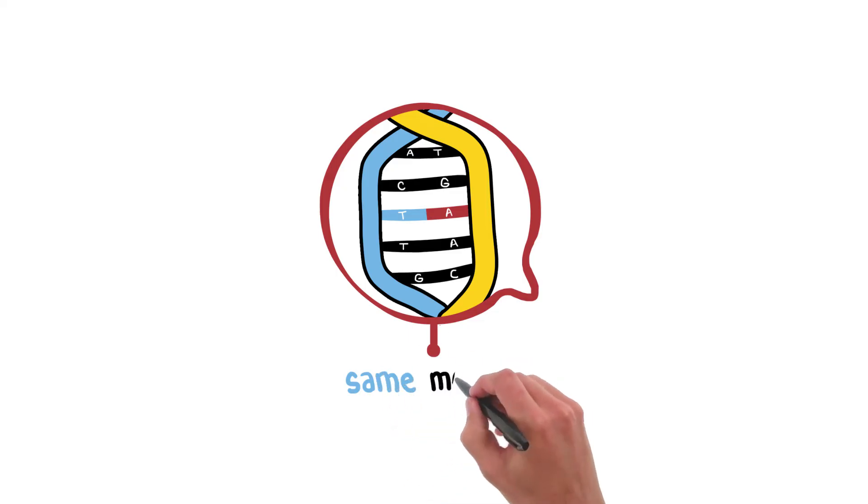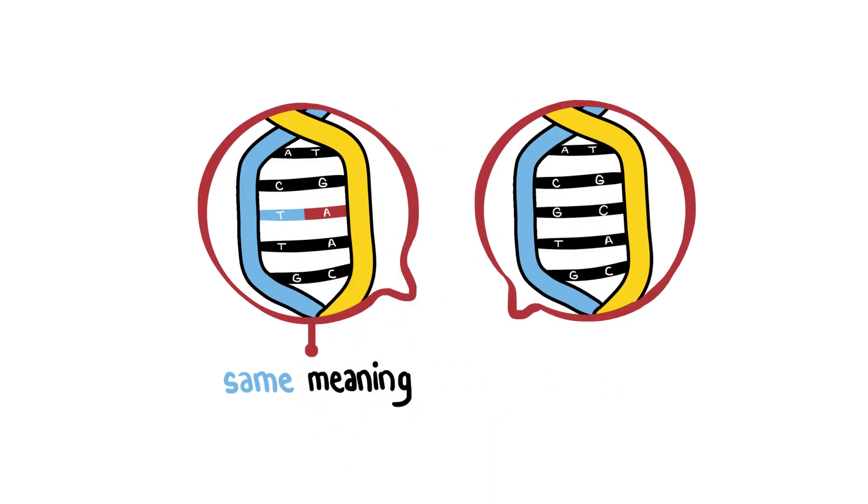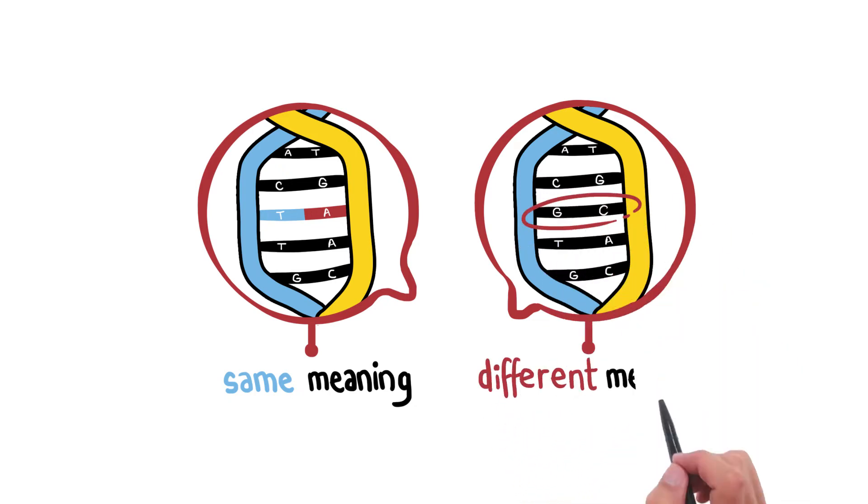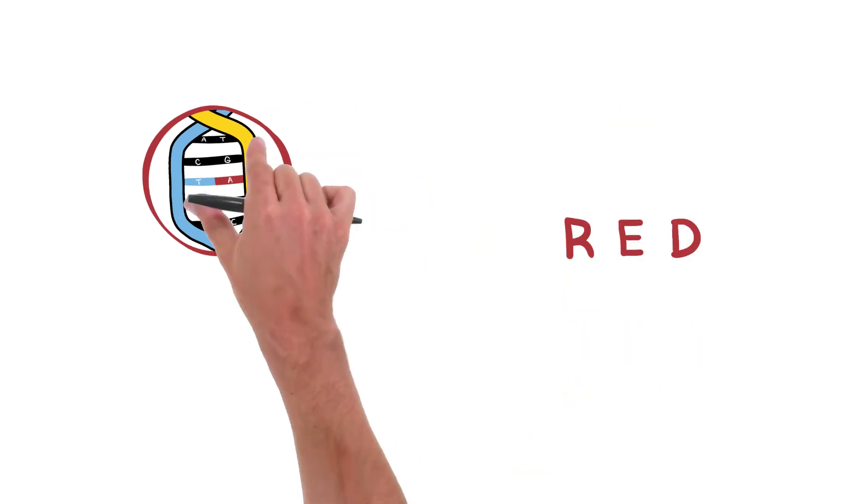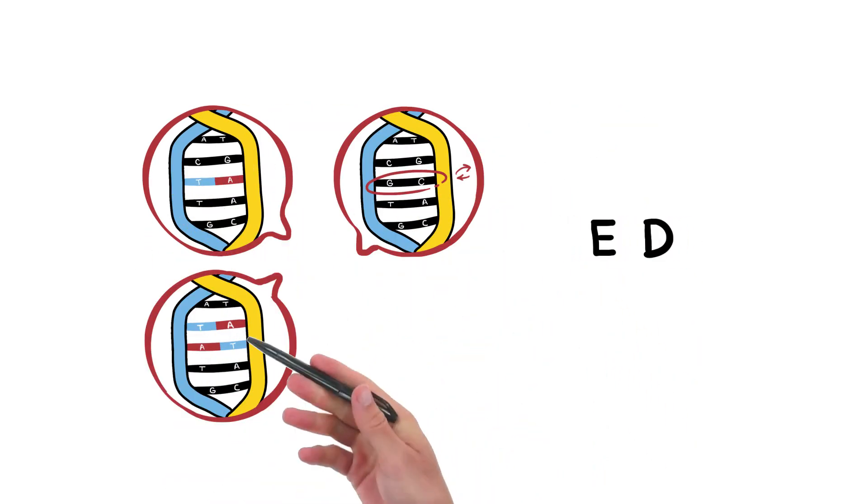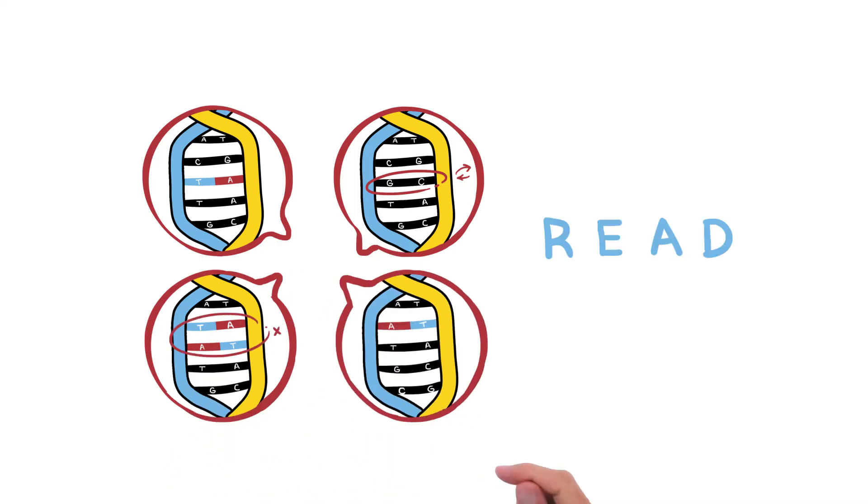Some alleles are spelled in a way that retains the original instruction of the gene. Other alleles contain changes to the sequence of letters, sometimes called DNA mutations, that change the meaning. Letters may be left out, repeated, or changed completely. Even a single letter change can have a big impact on the instructions that your body has.